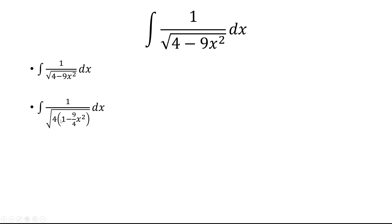So when we factor out the 4, we have 1 minus 9 fourths x squared. The 4 comes outside as 1 half.